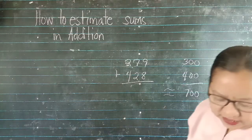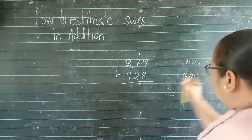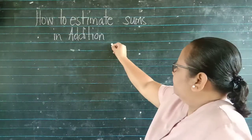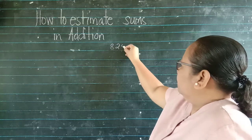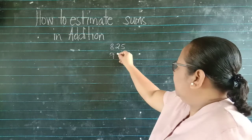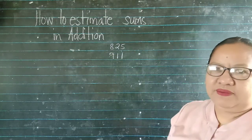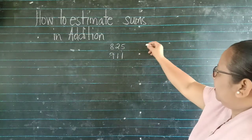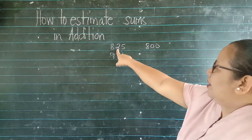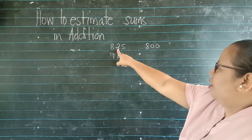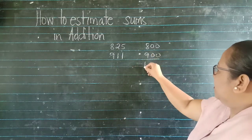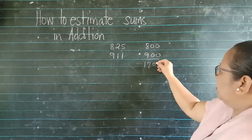Next, another sample. 825 plus 911. Nearest hundred po? 800. Bakit? Kasi po 2 ang kanyang katabi. Round down. And 900. So the answer is 1,700.